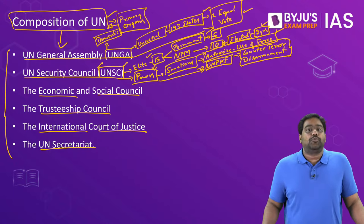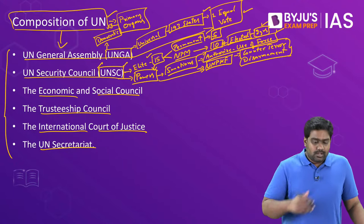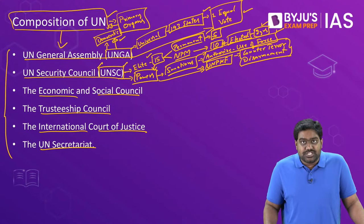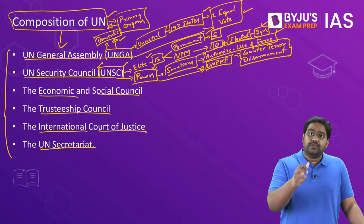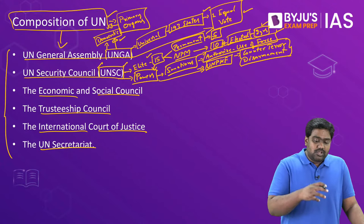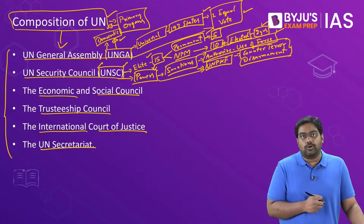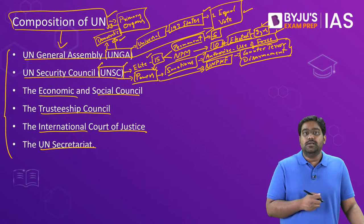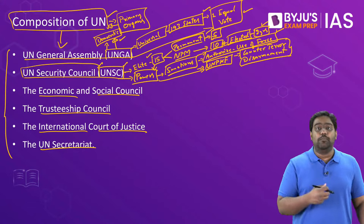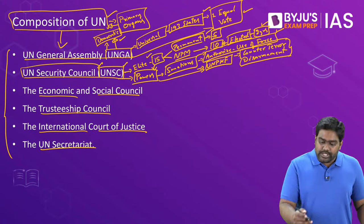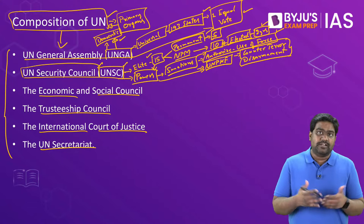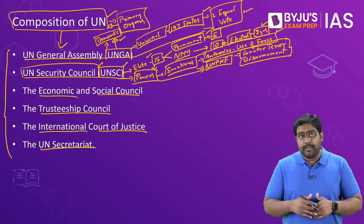This is where the problem arises within the UN. On one hand, you have a democratic body like the UNGA where every country has equal representation and equal voting rights. But UNGA is not the most powerful organ — it doesn't have all the powers. All the key powers have been kept reserved with the UNSC, which is an elite body of just 15 countries, and out of them only five are the permanent members.